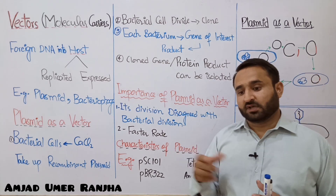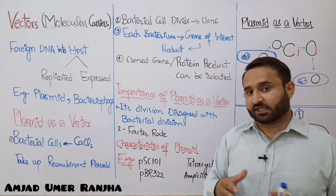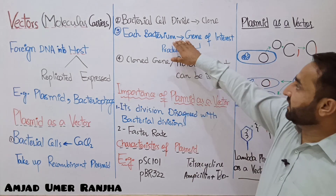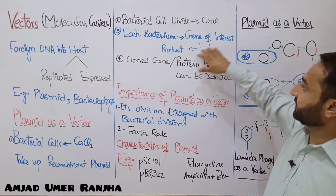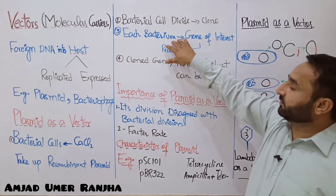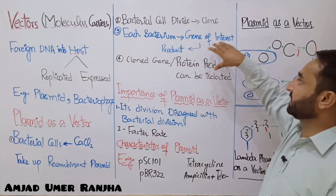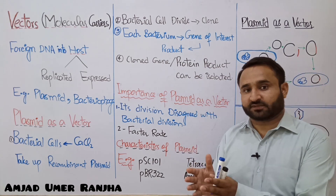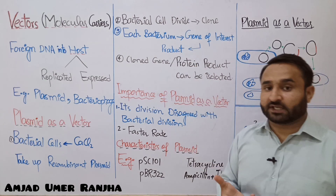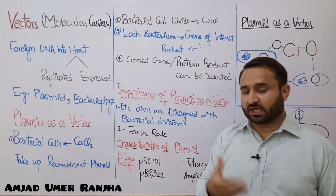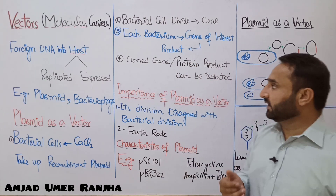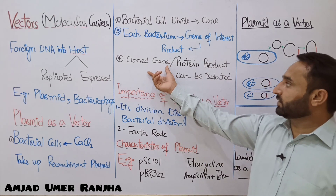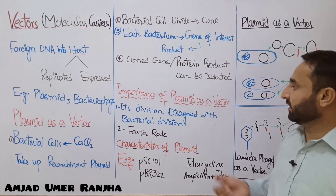Next, bacterial cells will divide, and clones of that foreign DNA will form with each division of the bacterial cells. From each bacterium, we can isolate either the gene of interest from the plasmid, or the protein or hormone product of the gene of interest, whenever we want. This is how cloned gene or protein product can be isolated.